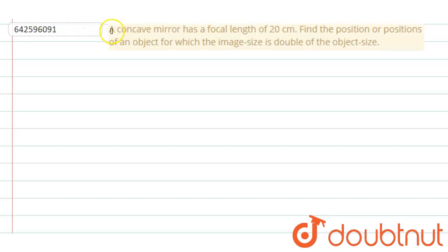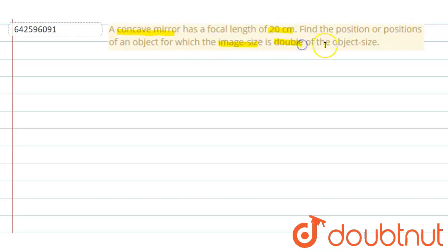The question says that a concave mirror has a focal length of 20 centimeters. Find the position or positions of an object for which the image size is double the object size.